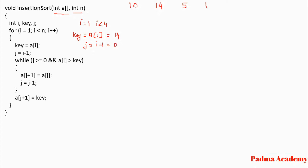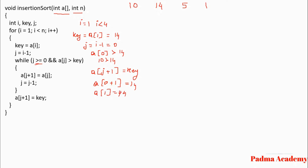Then it checks: while j is greater than or equal to 0, and a[j] is greater than key — that is, is a[0] greater than 14? That is, is 10 greater than 14? This condition is false, so it will not execute the while loop. It then executes a[j+1] = key, that is a[1] = 14, which is already 14. So the array remains 10, 14, 5, and 1.